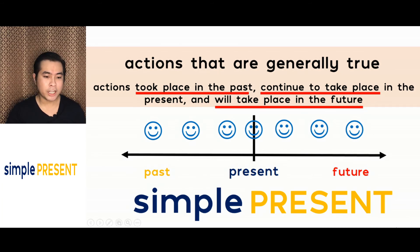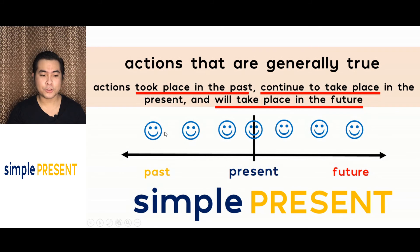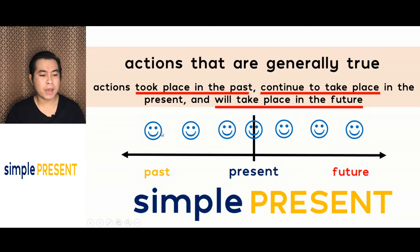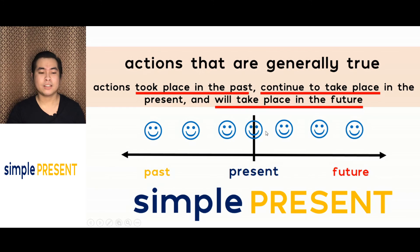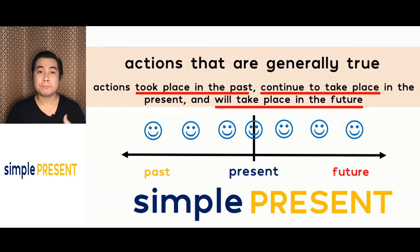As you can see in the illustration, you have a smiley to show you actions. For example, 'smiles' — he smiles every day. So it took place in the past, it takes place in the present, and will take place in the future. So that smiling continues. That's your simple present — it is a repeated action or a habitual action.